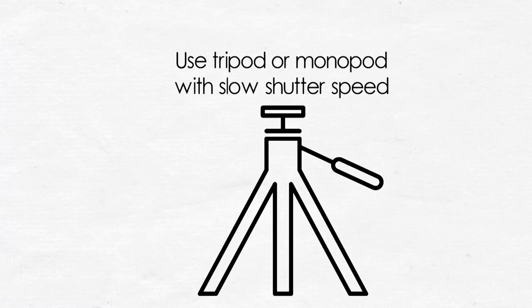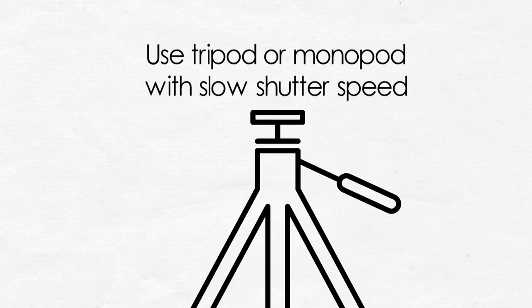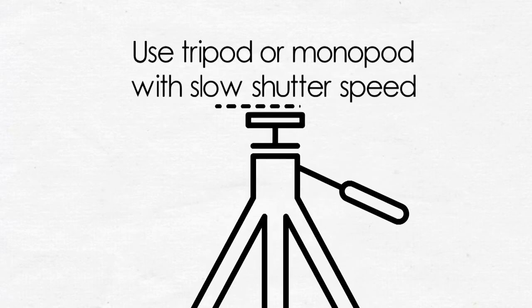In slower shutter speeds, it is always advisable to use a tripod or a monopod to avoid shaking of the camera. Let us get to know the in-depth knowledge related to the working of a shutter speed and its impact on the photographs that we take.